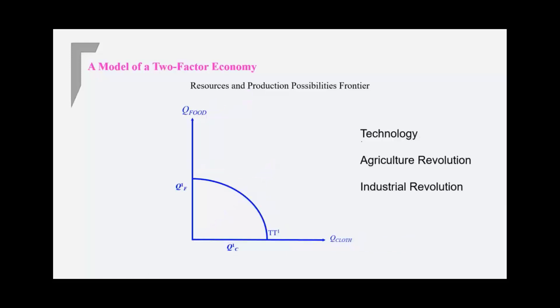Now what about change in technology? Say, agricultural revolution. Well, in that case, technology improved in the food sector, agriculture sector. If the technology improved only in the food sector, and there's no change or improvement in the technology of the cloth sector, then you will have an outward shift of your production possibility frontier. But there would be no change in the production of cloth because there is no change in the technology for the cloth production.